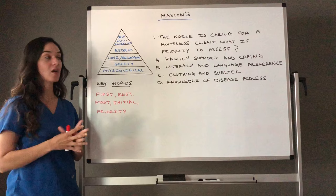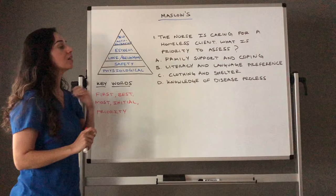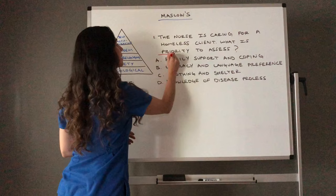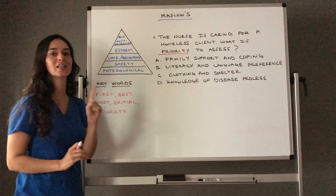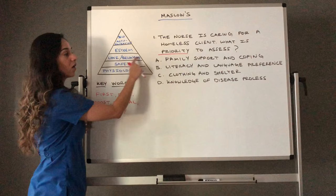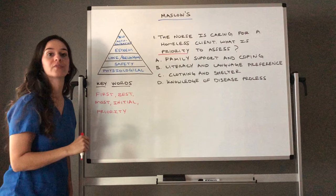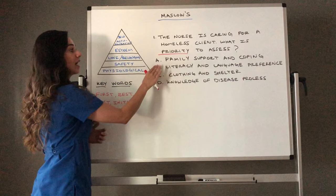Let's look at this question: 'The nurse is caring for a homeless client — what is priority to assess?' In this NCLEX world, if you can only assess one thing and keep them alive and safest, what is it? Family support and coping falls into love and belonging — important, but not priority. Literacy and language preference falls into self-esteem or self-actualization — higher on the pyramid, not priority.